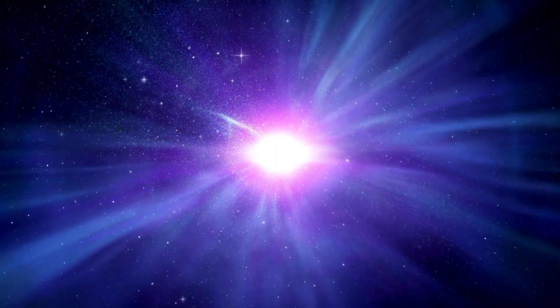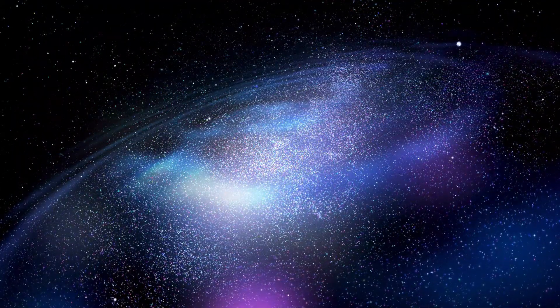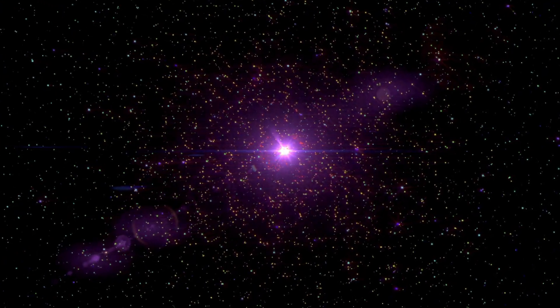Even Jupiter pales in comparison to HD 546b, a massive planet seven times its size. However, these celestial bodies are overshadowed by our sun, which, although immense, appears tiny next to Stevenson 2018, a colossal red supergiant. The scale of the universe's wonders continues to astound.